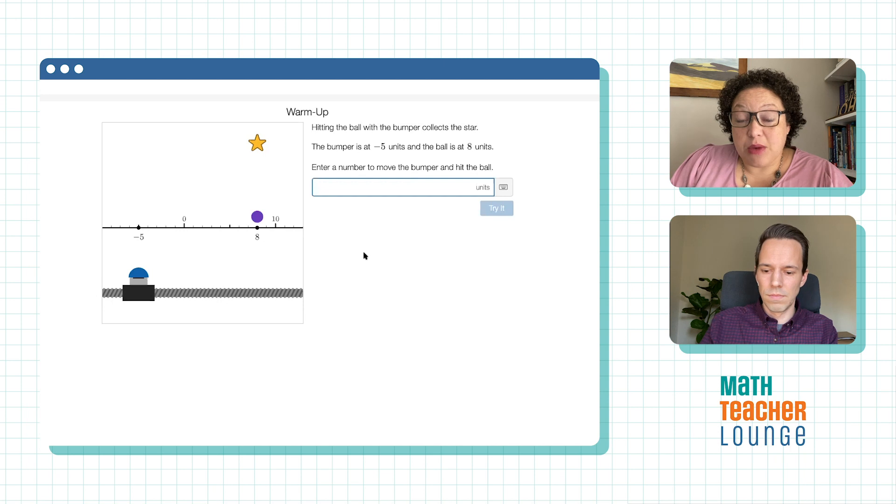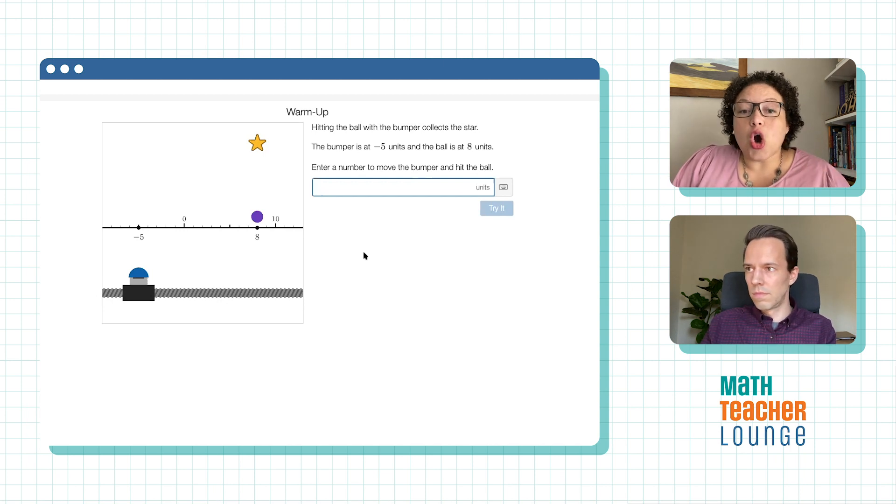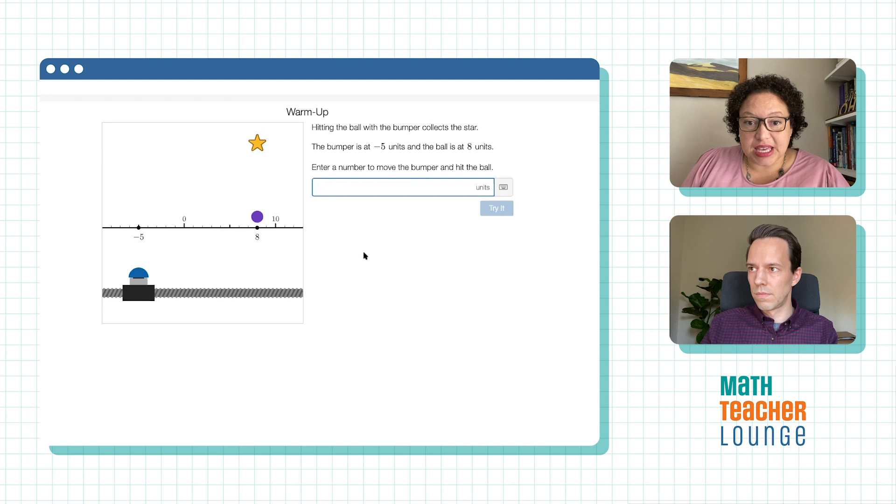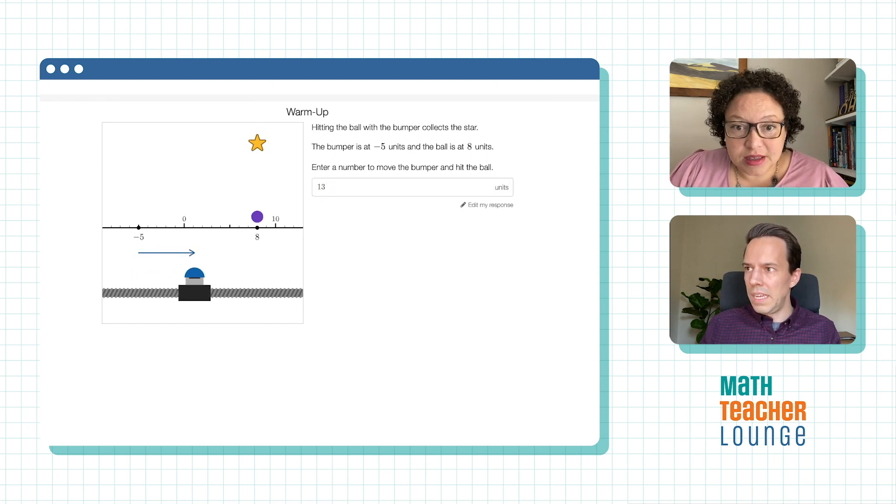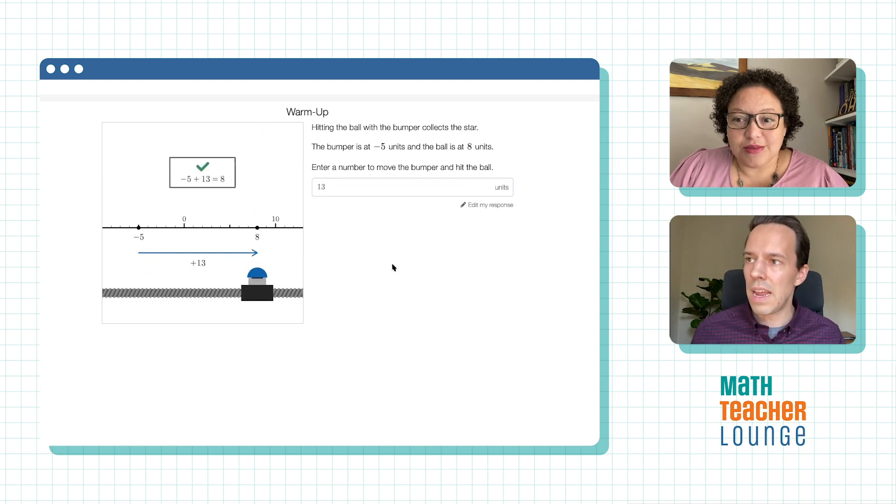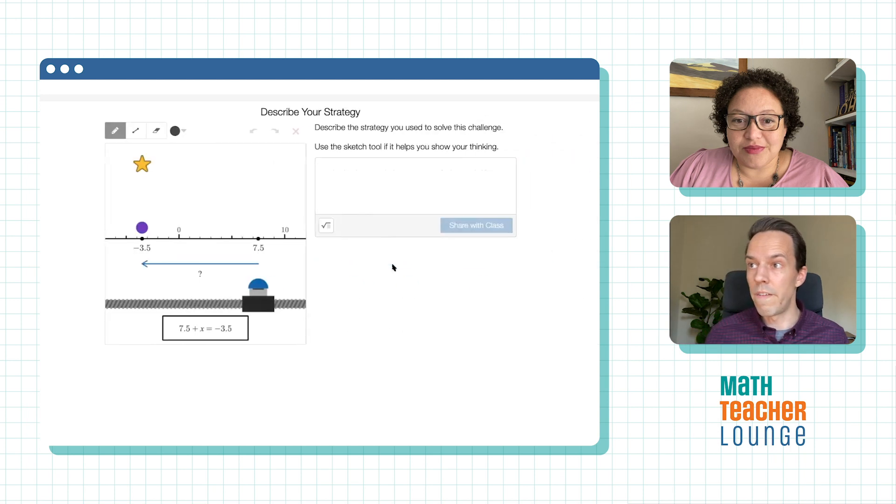I would think then they would maybe look at, Oh wait, I'm not attending to where the bumper is starting, which is the negative five. So I need it to even get to zero before I can get to the eight. So then they might say 13. So 13, we try it out. It goes. So here's, you got it here. And so here's step number one for us, for me is like asking questions that don't have a right or wrong answer is a very fantastic way to get out of the anxiety that comes with wrong answers.